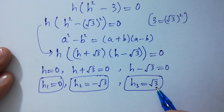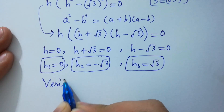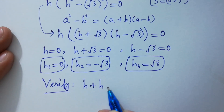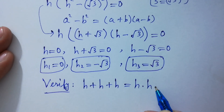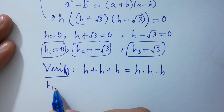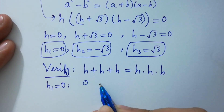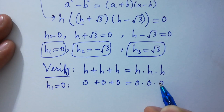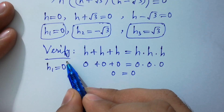Which are the values of h? Now let's verify. For h plus h plus h equal to h times h times h: first, put the value h equal to 0. We have 0 plus 0 plus 0 equal to 0 times 0 times 0, giving 0 equal to 0. This shows that h1 equal to 0 is correct.